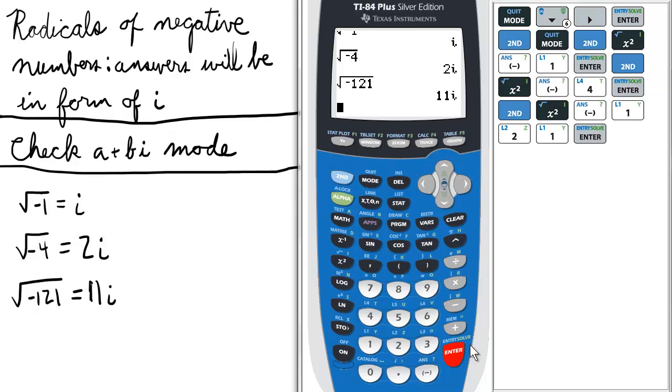I recommend staying in the a+bi mode because if it's an imaginary answer, it will give it to us in the form of i rather than an error message. If it's a regular or real answer like the square root of 25, it will show up as 5 and not something funky in terms of i.